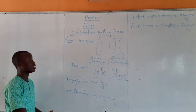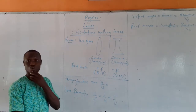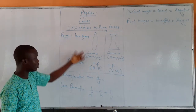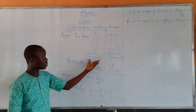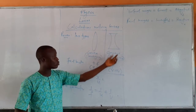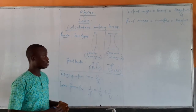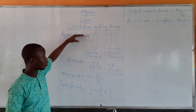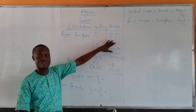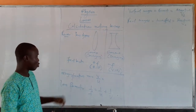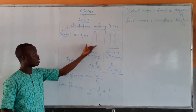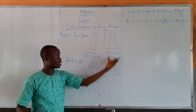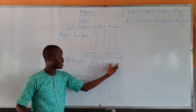As a review, we have two types of lenses. We have the convex lens which is also the converging lens, and we have the concave lens which is the diverging lens. Every ray of light parallel to the principal axis for the convex lens converges to a point, while for the concave lens it diverges. The focal length for the convex lens is always positive, while the focal length for the concave lens is always negative.